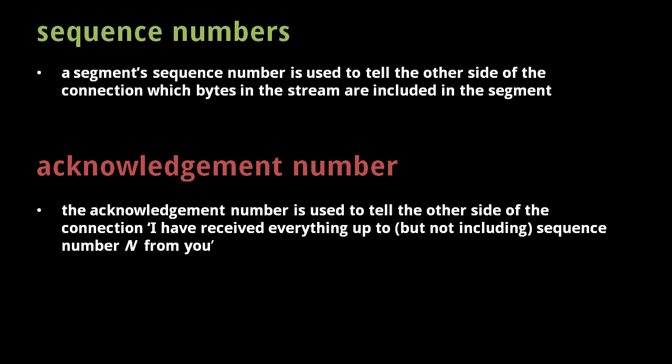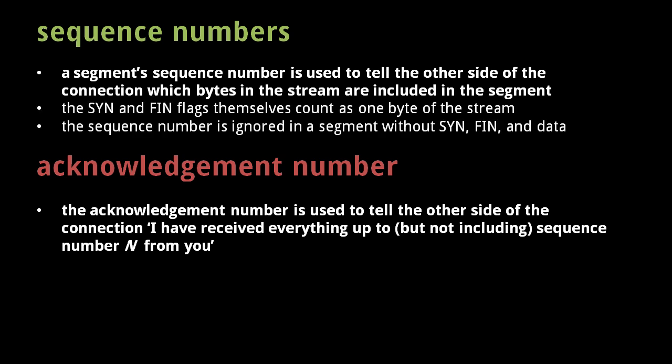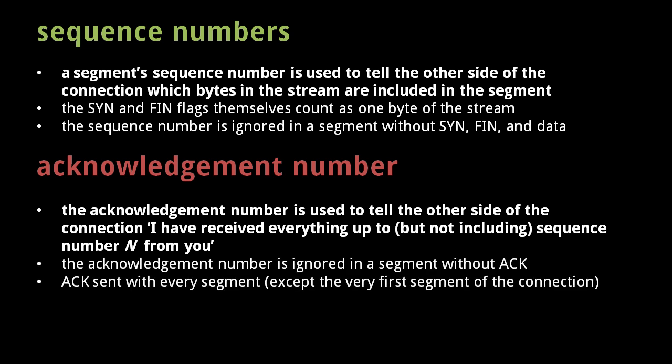The acknowledgement number indicates the leading part of the stream without gaps. So if our side received every byte up to byte 350 and also bytes 470 up to 600, the acknowledgement number we send will still be 350, not 600. When a segment is sent with the synchronized or finished flag, those flags themselves count as a byte of data in the stream, so the acknowledgement number we next send should be incremented by 1. In a segment without the synchronized or finished flag and without bytes of data, the sequence number field is ignored. Likewise, in a segment without the acknowledge flag set, the acknowledgement number field is ignored.